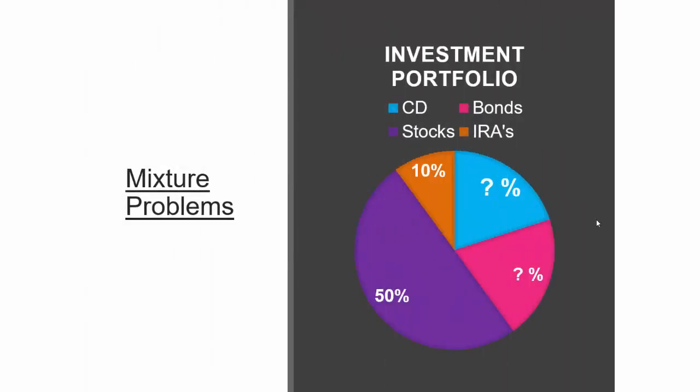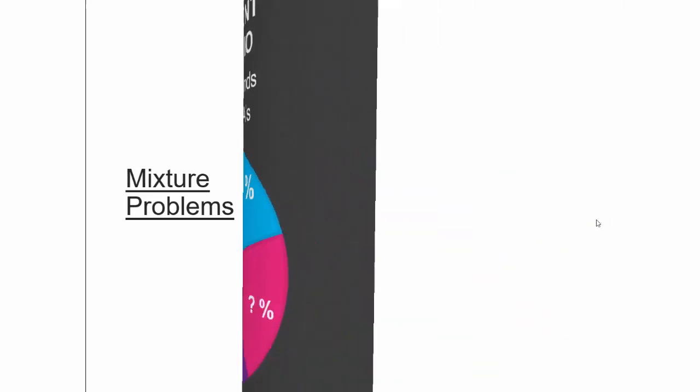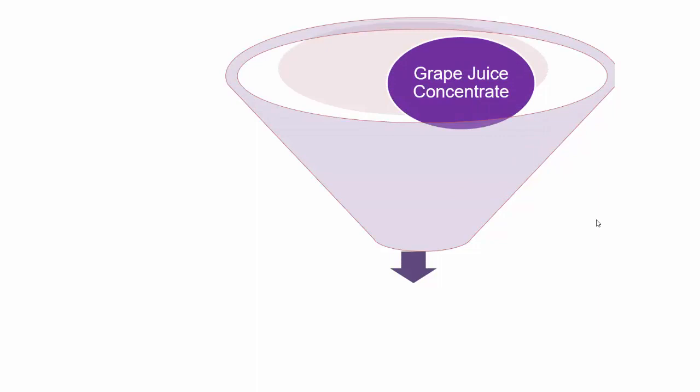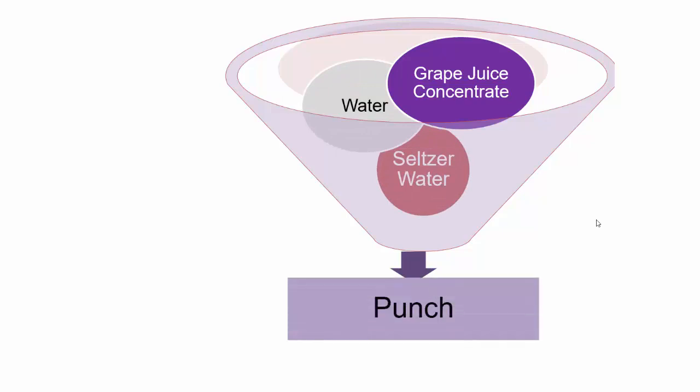Let's talk about a type of word problems called mixture problems. Mixture problems don't always mean you're adding liquids. It could be an investment portfolio made up of CDs, stocks, and bonds, where you want to figure out how much to invest so your total interest is a particular amount. You could also be working with actual mixtures, like making punch from grape juice concentrate and water at a particular concentration.